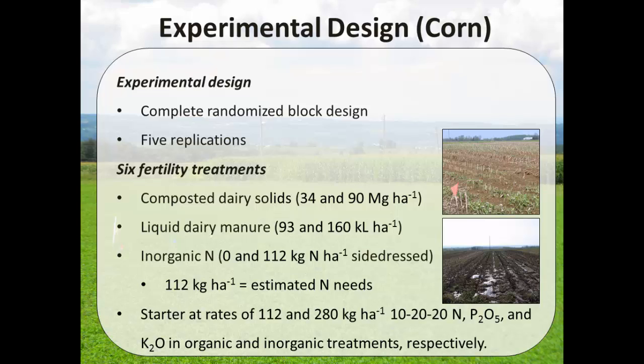We had a starter fertilizer applied at planting: 112 kg of 10-20-20 N, P2O5, and K2O in our organic plots, and 280 of 10-20-20 N, P2O5, and K2O in our inorganic plots.